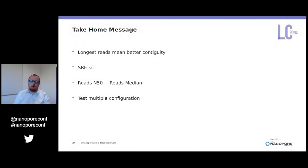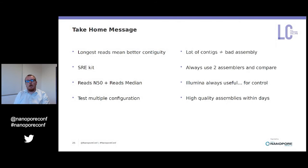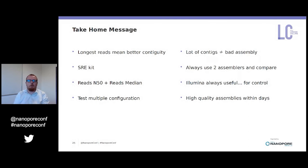The short-read eliminator kit is very powerful for removing short reads and increases the median read length, which is an important parameter for contiguity. Everyone looks at N50, but we found that the median read length is also critically important for good assembly contiguity. It is also important to test multiple configurations between assembler and polisher. Having many contigs does not mean a bad assembly — you may have large numbers of very short contigs that contribute little, alongside very long contigs that represent 99 percent of the assembly.